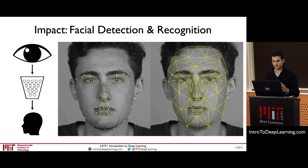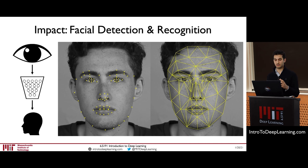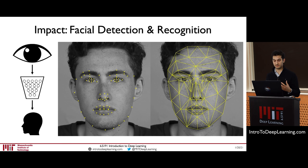Deep learning has taken computer vision by storm because of its ability to learn directly from raw image inputs and learn feature extraction through observation of a large amount of data. A prevalent example is facial detection and recognition. Deep learning has transformed this field because it allows the algorithm creator to easily swap out the end task given enough data, learning the neural network between the vision input and the task.